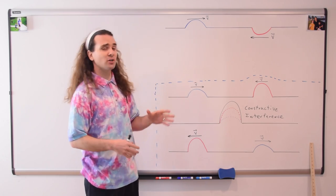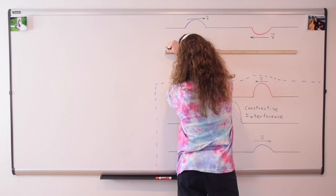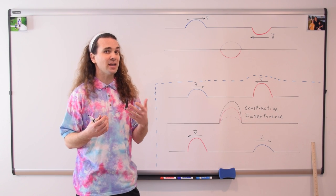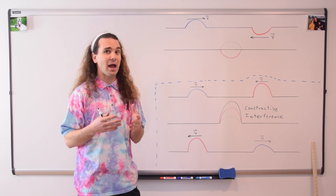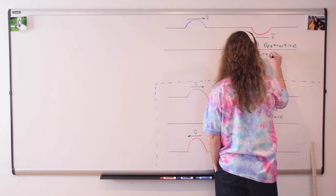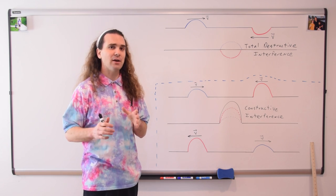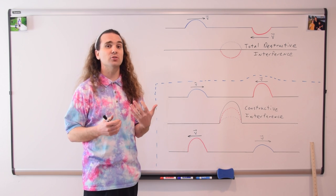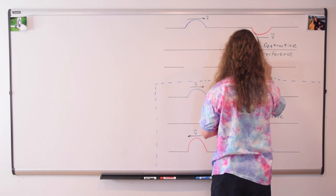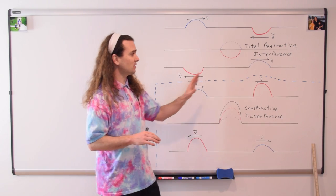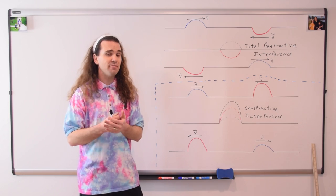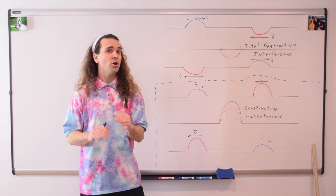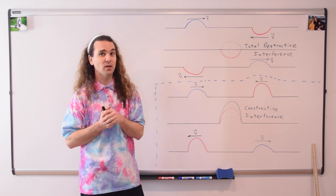Now let's look at what happens when the amplitudes are not on the same side of the rope. Because the two interfering wave pulses are of equal magnitudes and opposite directions, they end up canceling one another out completely. This is called total destructive interference. You can also have partial destructive interference if the magnitudes of the amplitudes are different. Again, the two wave pulses continue on afterwards, unaffected — even though when they occupied the same space the rope was entirely flat because they completely canceled one another out.